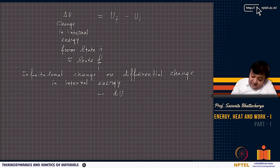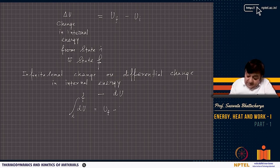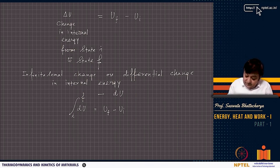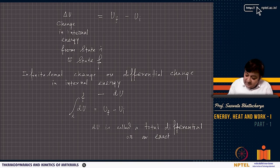If dU is a differential change, then integrating dU from state Ui to Uf basically gives Uf minus Ui. This dU is called a total differential or exact differential.